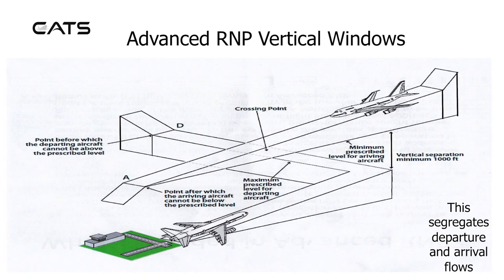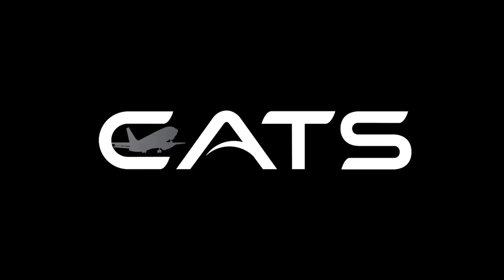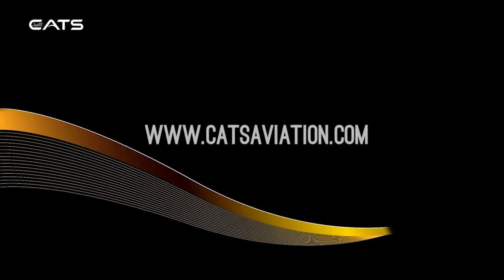Advanced RMP and Vertical Windows: The whole point of advanced RMP with vertical windows is to segregate departure and arrival flows, so that a minimum vertical separation of 1000 feet is maintained at the crossing point.